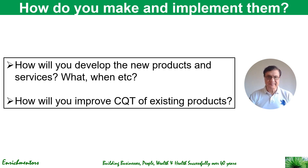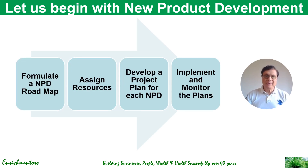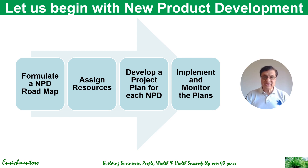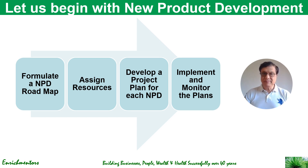Let's begin with new product development and give you an overview of how to develop new products and services. Basically what you need to do is formulate an NPD roadmap, and this comes primarily at the senior management level of R&D — if you are an R&D director, it would be your primary responsibility. Then you need to assign resources, and for each new product you need to ensure your team develops a project plan for implementation, then implement and monitor the plans. Those are broadly the four steps: formulating the NPD roadmap, assigning resources, developing a project plan for each NPD, and implementation and monitoring.